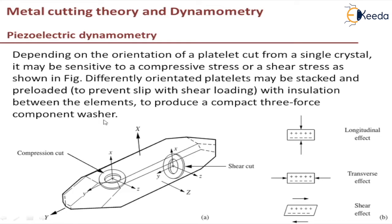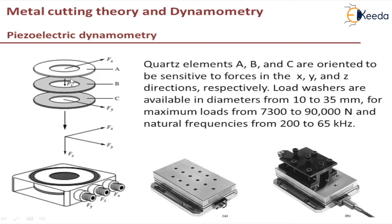It is usually a three-component washer, which we will discuss in the next slide. As you can see in this sketch, it is a three-component washer platelet with components A, B, and C. Washer A is used to sense the force in the X direction, that is Fx. Washer B is used to sense Fz, and washer C is used to sense Fy. All these are packed together and stacked inside the platform. A sealing is provided because a tool holder is mounted on this platform, and any cutting fluid used for lubrication and heat dissipation should not damage the quartz. It is sealed so that no cooling fluid enters inside the platform.